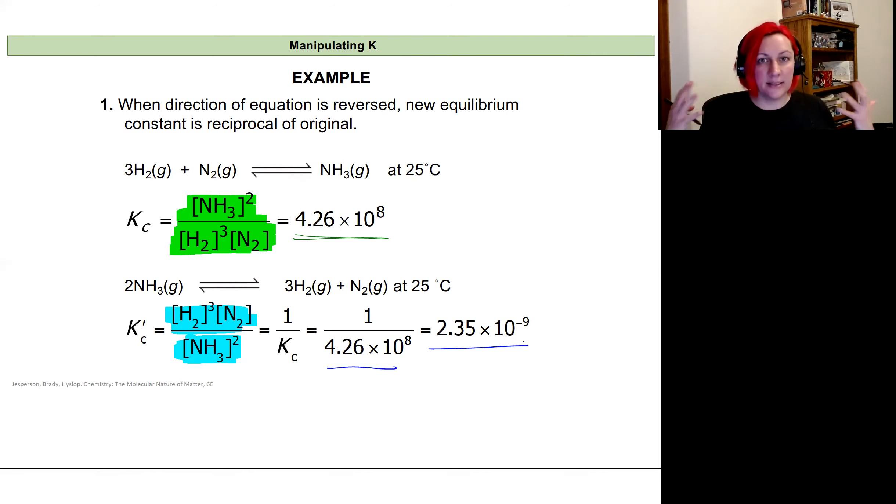I can back this up experimentally by looking at experimental equilibrium concentrations for both versions of this reaction, one starting from hydrogen and nitrogen and the other starting from ammonium. I'll get a K value where the inverse matches the opposite reaction.